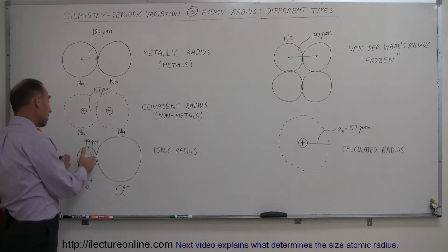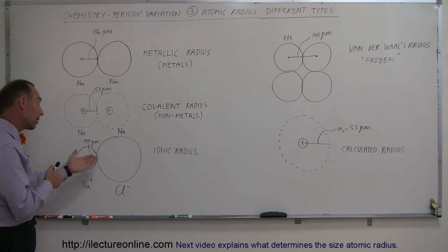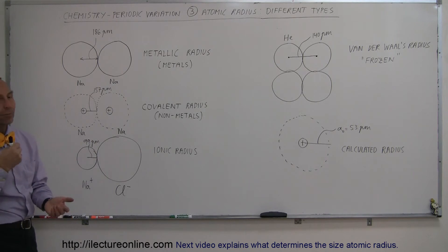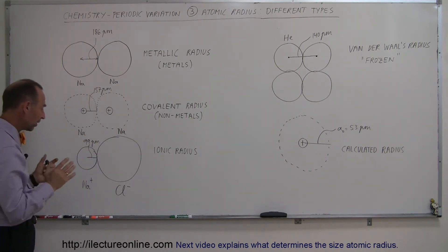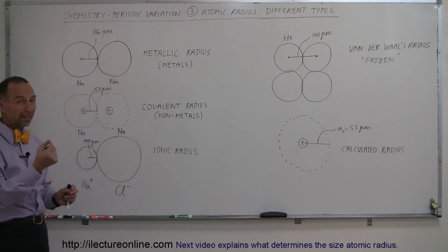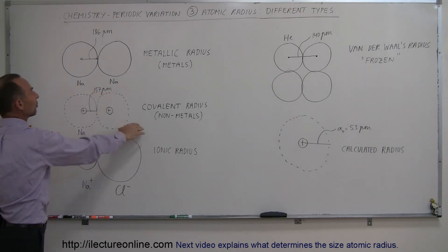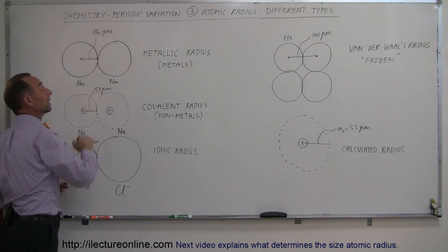It turns out that ions tend to be typically much smaller for metals. Ions become bigger for non-metals because non-metals tend to gain more electrons and metals tend to donate electrons. So because of that, you can see that the radius of a sodium ion with just one electron removed is significantly smaller, only 99 picometers.